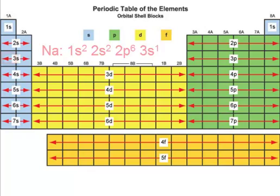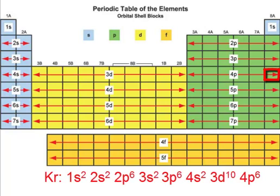If you have something like krypton right at the end there, if we want to go to that electron configuration, we're going to do 1S2, 2S2, 2P6, 3S2, 3P6, 4S2, 3D10, and then 4P6.